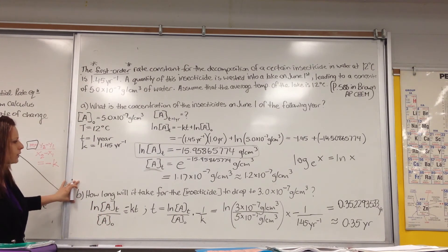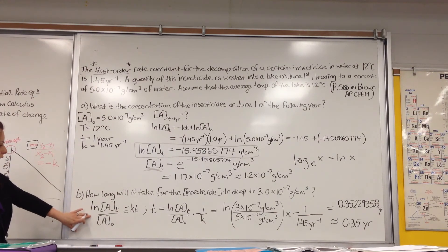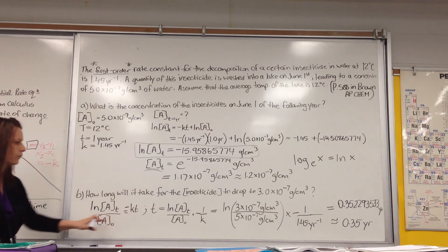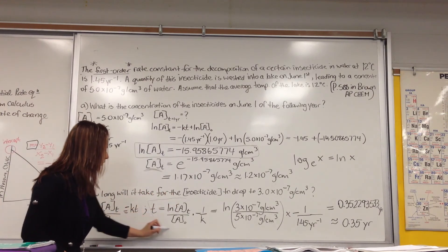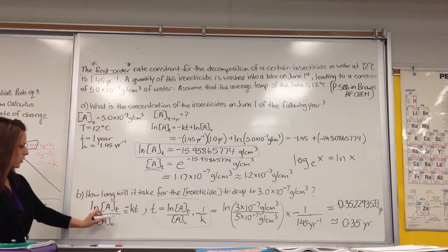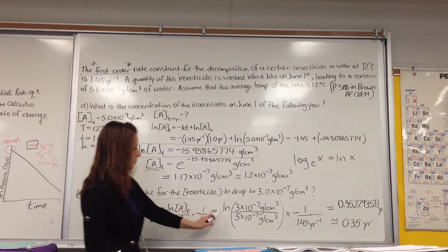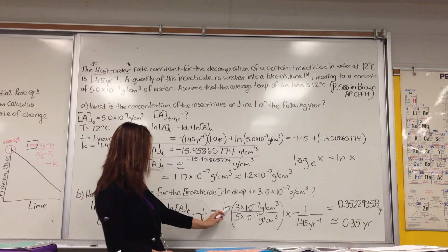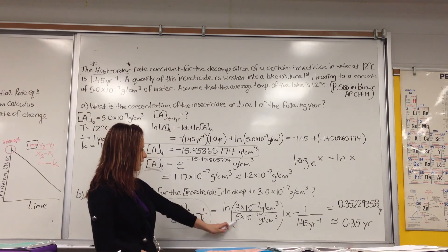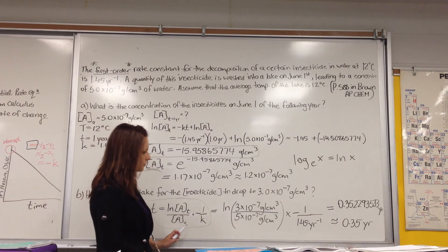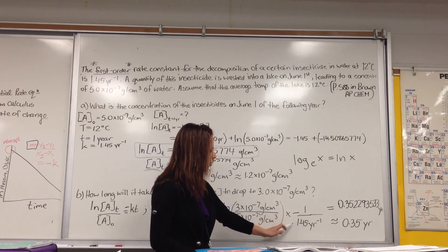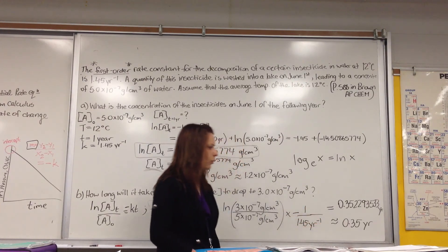Part B, how long will it take for the concentration of the insecticide to drop to 3 times 10 to the negative 7 grams per centimeter cubed? So in this case, I used this form of the integrated first order rate law equation because I could easily then solve for T, because that's what I'm asked to figure out. So I rearranged to sub in so that I can easily sub in all my numbers for time T, which I end up getting. I sub in 3 times 10 to the negative 7 as my A at time T. My initial concentration is in the denominator times 1 over negative K, which gives us approximately 0.35 years.